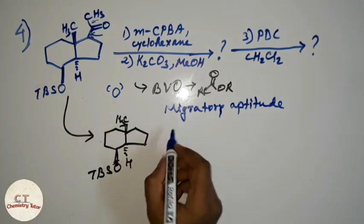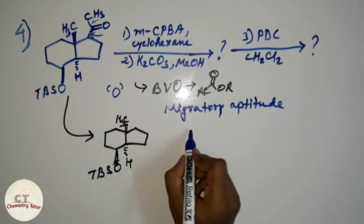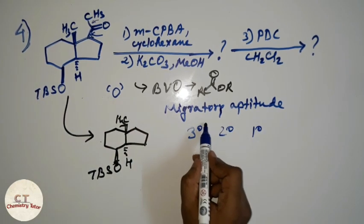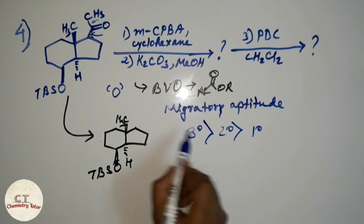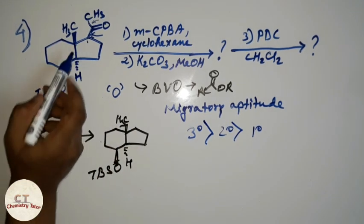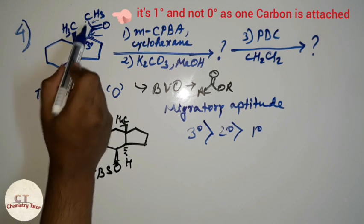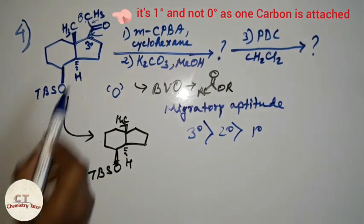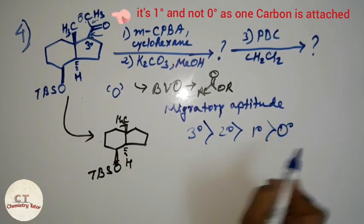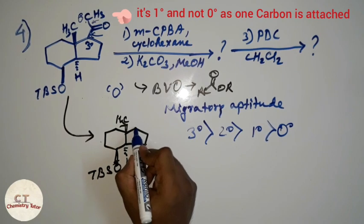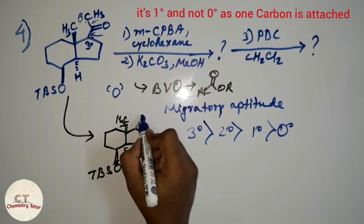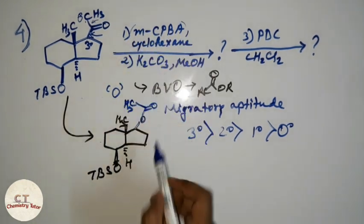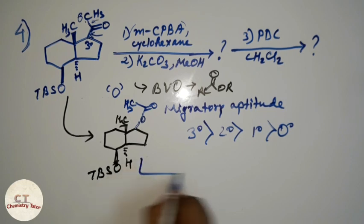In Baeyer-Villiger oxidation, remember: the priority order is tertiary carbon > secondary carbon > primary carbon. Here, one carbon is tertiary degree and the other has three hydrogens, making it zero degree. Since the tertiary carbon has higher priority, the oxygen is inserted next to the tertiary carbon, forming the ester product.